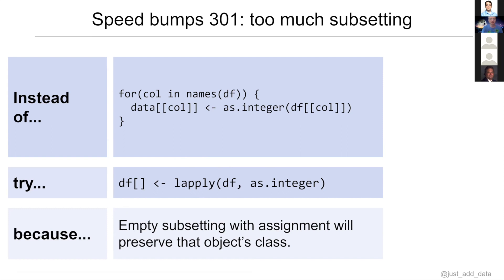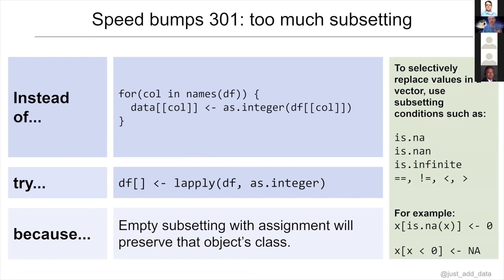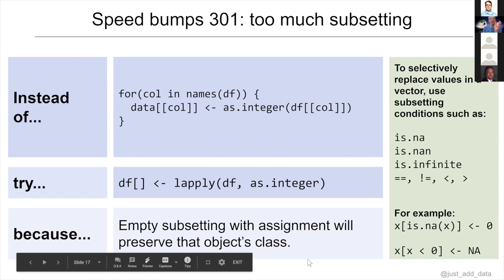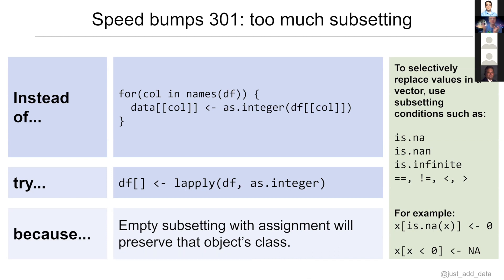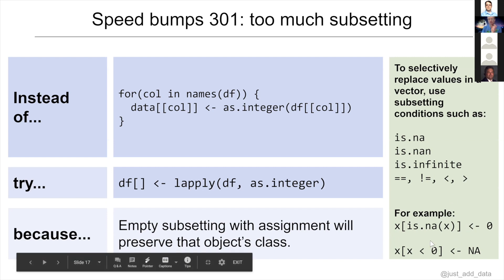This is a kind of weird, esoteric trick, but if you ever do have to do something like this it actually creates a huge speedup. Square bracket subsetting can also be used for in-replacement — to selectively replace values in a vector. You might use different subsetting conditions if you want to replace values that are NA, infinite, equal to some value, or not equal to some value. You don't have to write a loop and check each individual value — just use square bracket assignment.